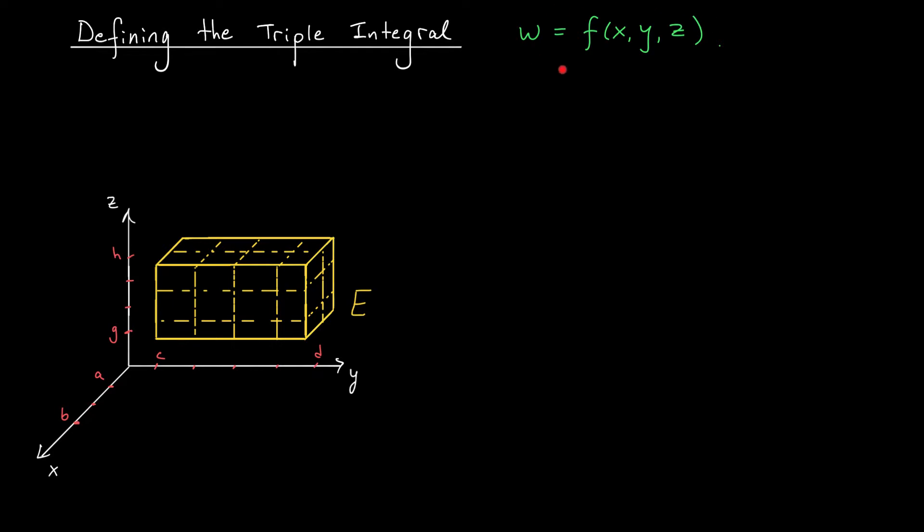Okay, suppose now we have some function of three variables, w equals f of x, y, z. The domain of this function is a subset of r3, right? It's a three-dimensional region. But still, we want to extend what we know for double integrals to define some kind of an integral for functions of this type. How do we do it?